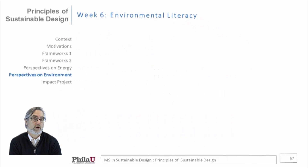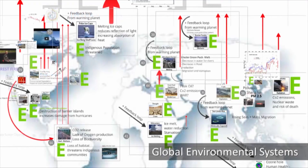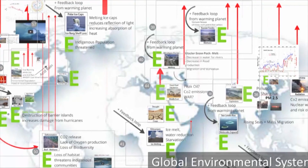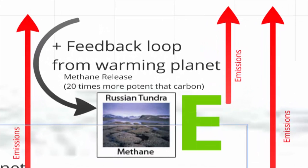Week six covers environmental literacy, looking at the entire planet as a giant ecosystem where the impacts of energy use are quite prevalent. We can begin to study amplification and feedback loops that are further driving climate change on planet Earth.